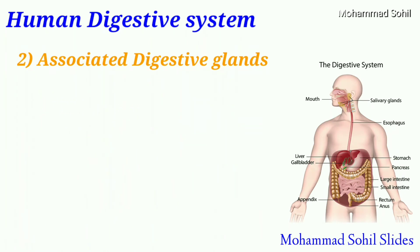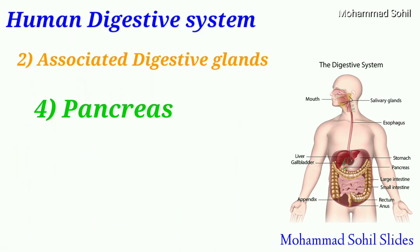Then the pancreas. The pancreas secretes pancreatic juice, which has three types of enzymes. First, trypsin, which is protein-digesting. Second, lipase, which is fat-digesting. And third, pancreatic amylase, which is a carbohydrate-digesting enzyme.